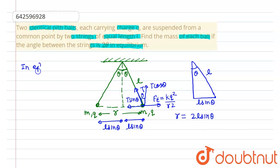In equilibrium position, the weight force in downward direction is mg. In equilibrium, T sin θ equals kq² upon r² equation 1, and T cos θ equals mg equation 2.